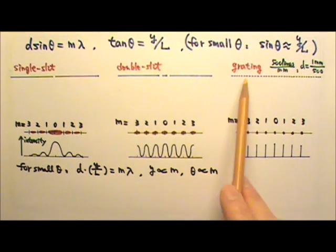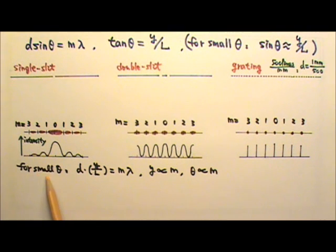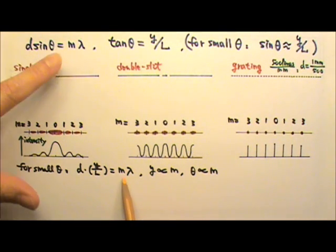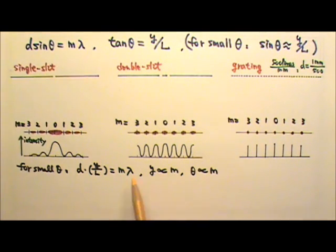Whether it's a single slit, double slit, or gratings, if we have small angles, then it's convenient because we can replace sine theta with y over L, and that equals m lambda, which means y would be proportional to m, and theta would be also proportional to m.